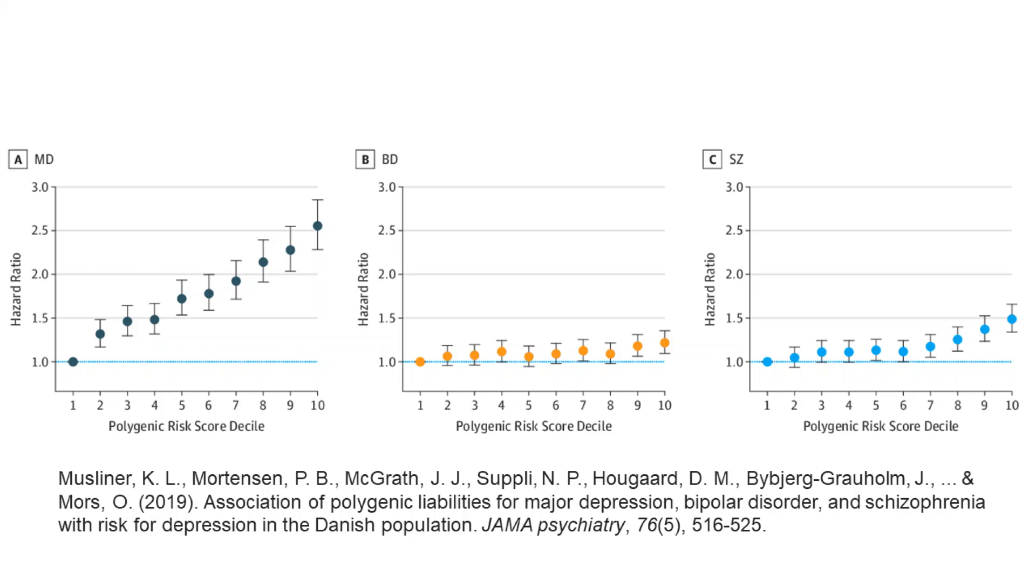Polygenic scores can also be used to shed light on the biological causes of diseases with high comorbidity by finding to what degree, if any, the polygenic score for one disease predicts the other.